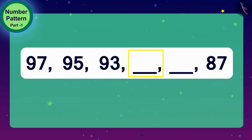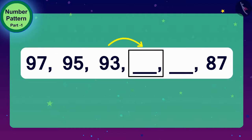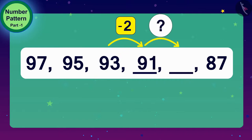The next number in this number pattern will be 2 less than 93. And what will be its next number? 2 less than 91. In this way, our pattern is completed.